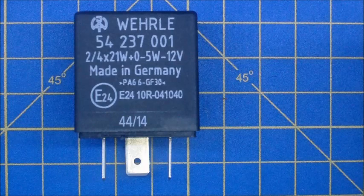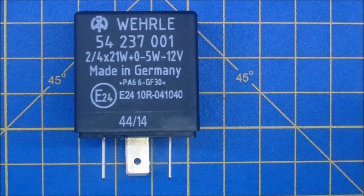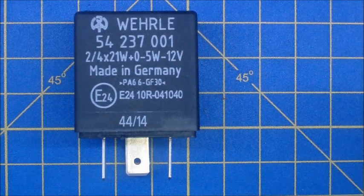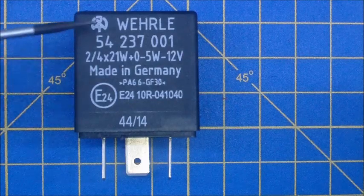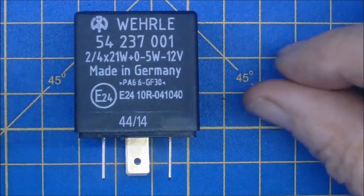We're going to take a look at a flasher unit typical of the type used during the lighting circuits exercise on the CPU filters course. This one is made by Verl, and like all others we use regardless of manufacturer, there are just three terminals on it.